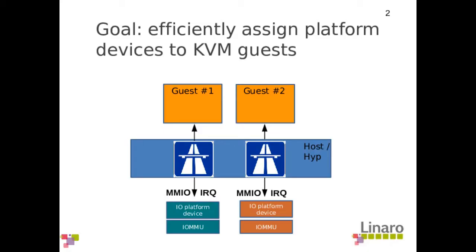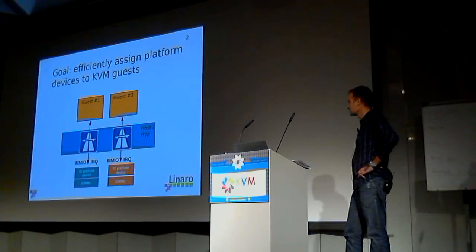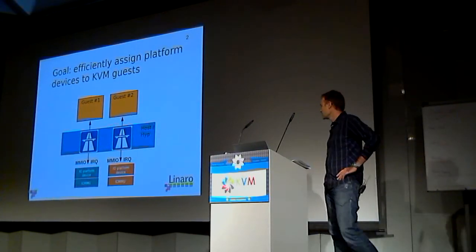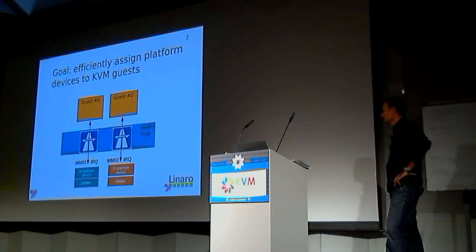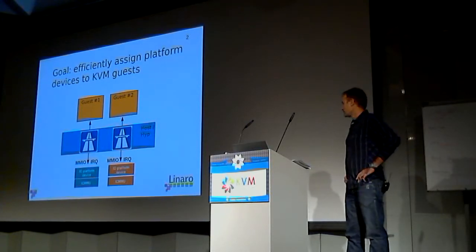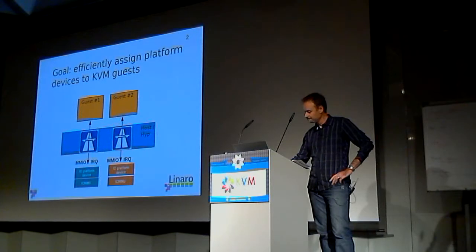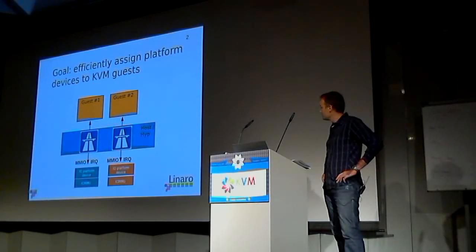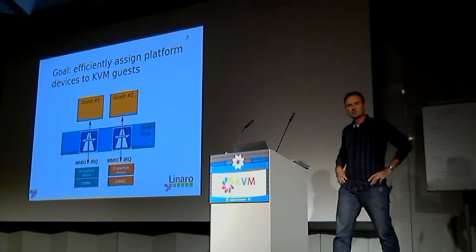The goal is to allow guests to have the most optimized access to a platform device that is assigned to it, meaning exclusive access. The hypervisor needs to set up the most optimized routes for MMIO accesses and IRQ injection. The IOMMU is involved in guaranteeing that DMA accesses of the devices do not jeopardize the integrity of other virtual machines. Assignment of PCI devices has been available for a while, but allowing assignment of platform devices is rather new and not yet upstream.